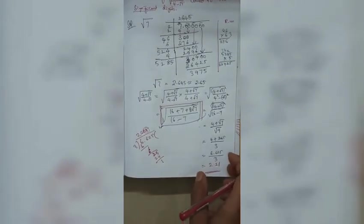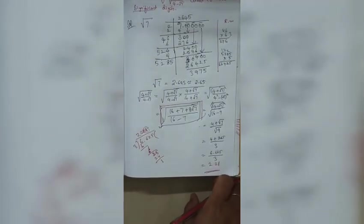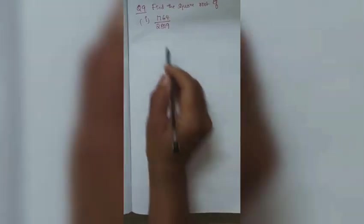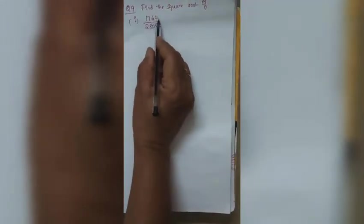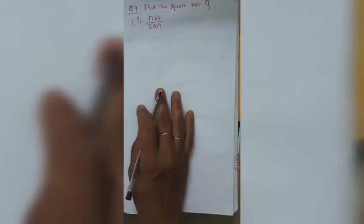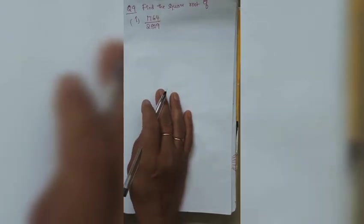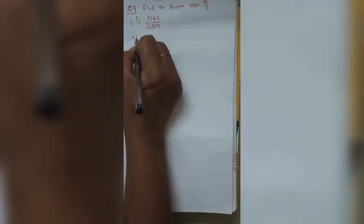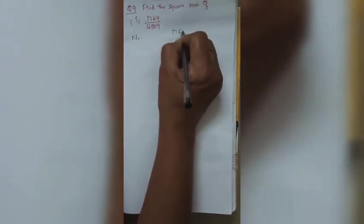One more question for you to try: square root of (3 − √5) / (3 + √5) using the same method. Also, find the square root of 1764 / 2809 by finding the square roots of the numerator and denominator separately. Numerator: √1764.